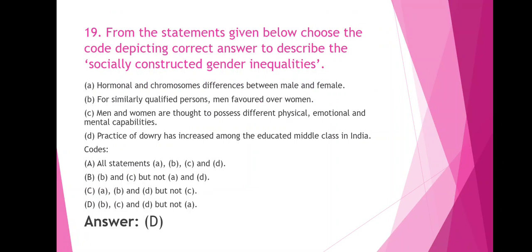From the statements given below, choose the code depicting the correct answer to describe the socially constructed gender inequalities. A: Hormonal and chromosomal differences between male and female. B: For similarly qualified persons, men are favored over women. C: Men and women are thought to possess different physical, emotional and mental capabilities. D: Practice of dowry has increased among the educated middle class in India. The correct answer includes Options B, C, and D.